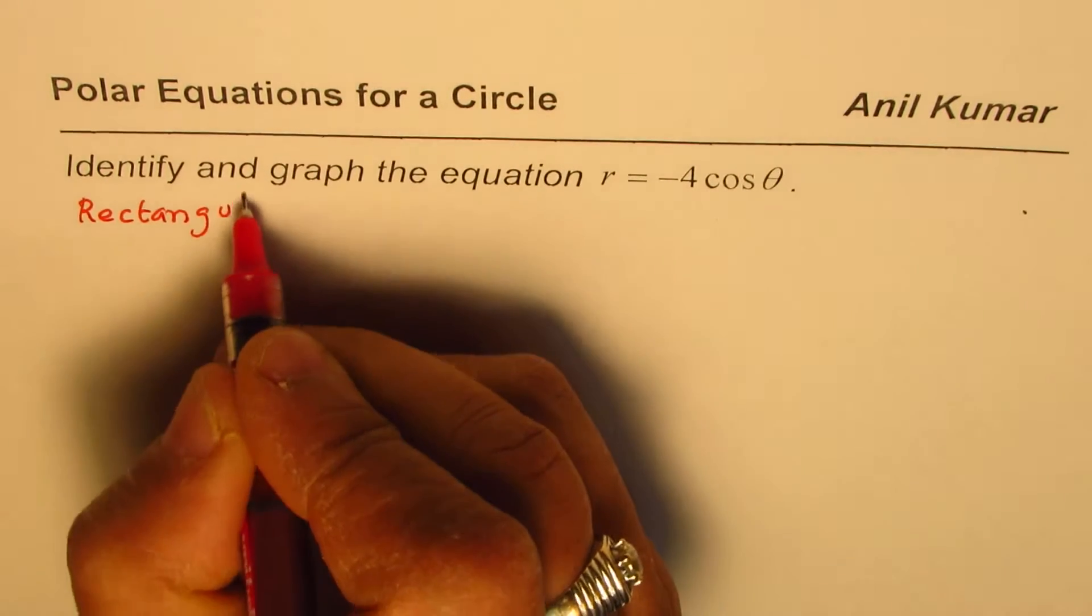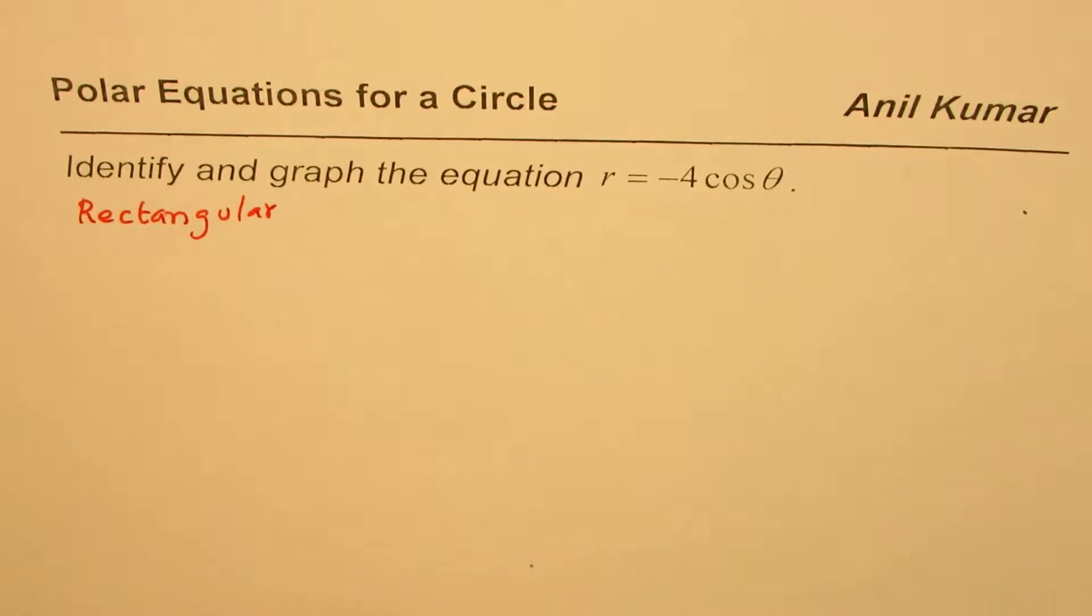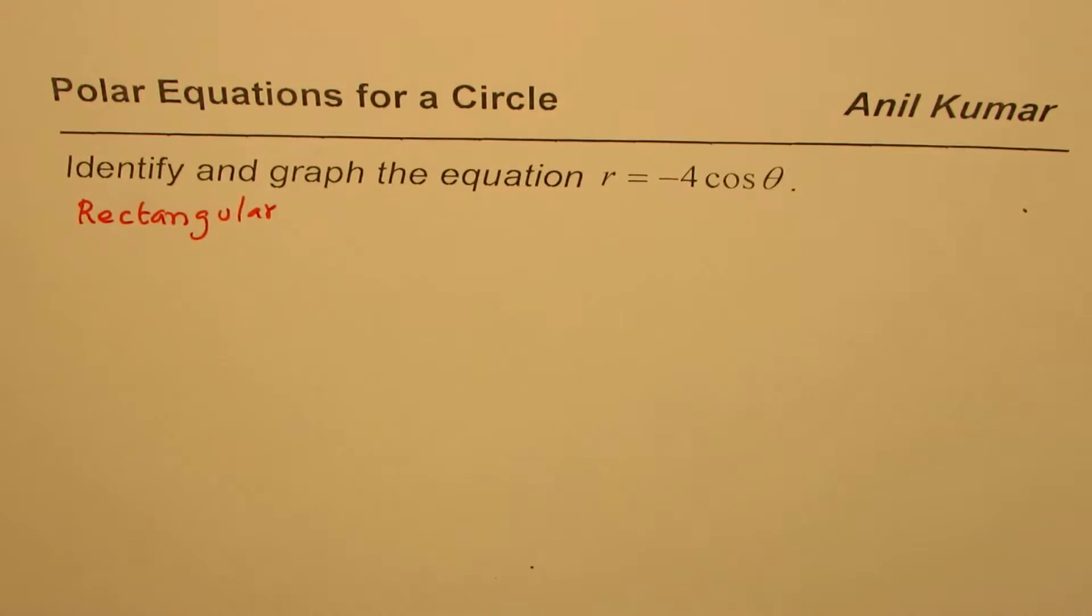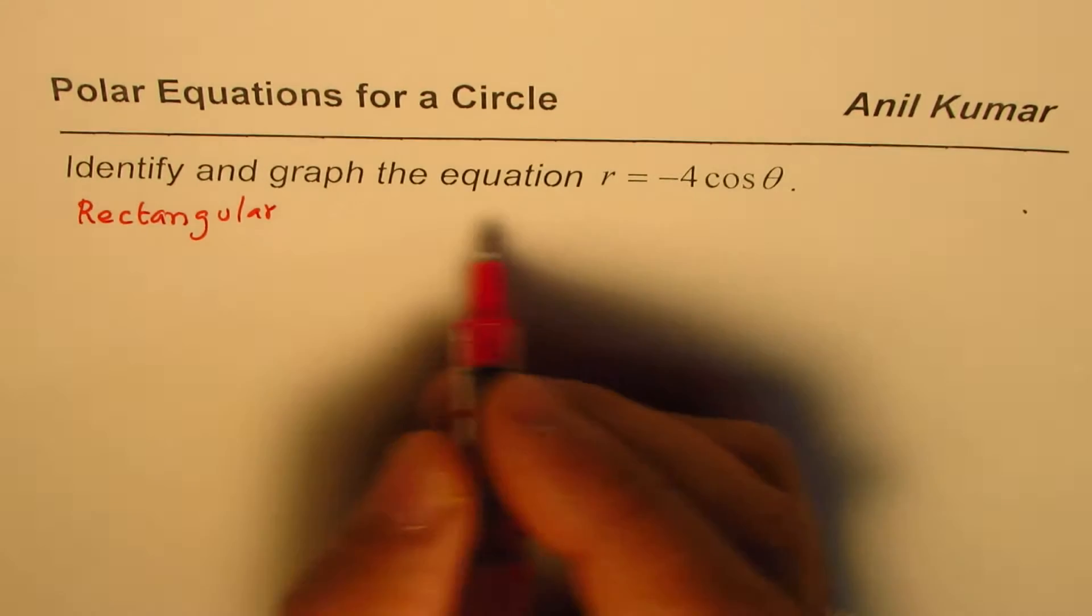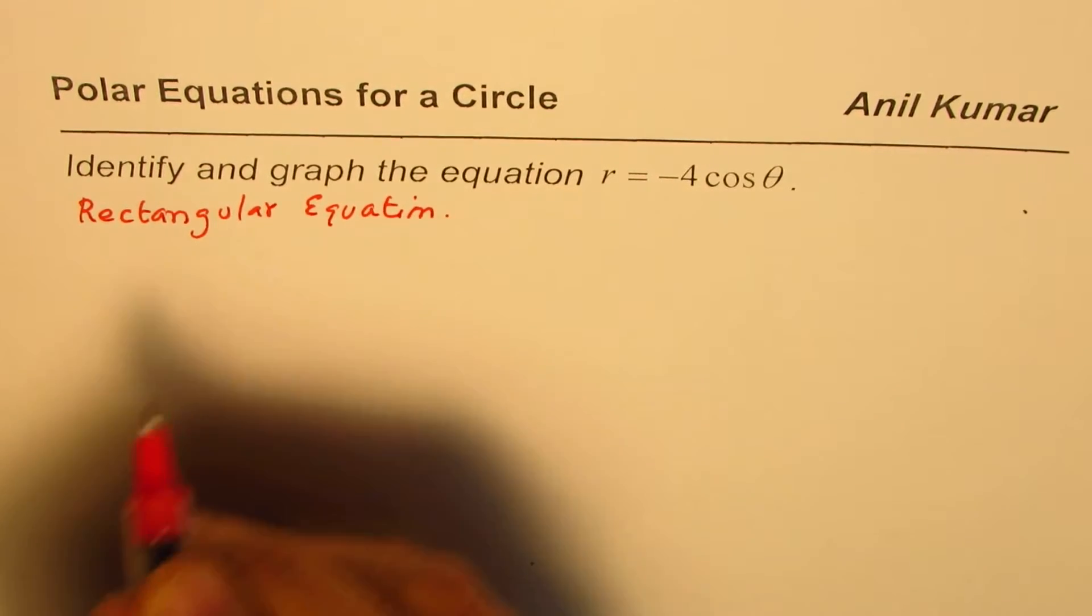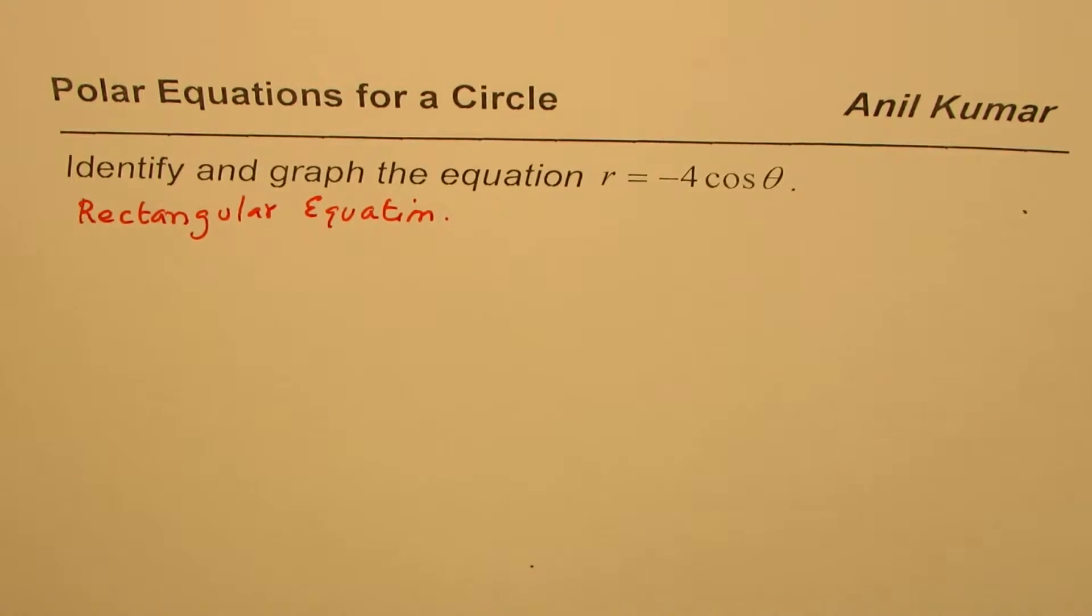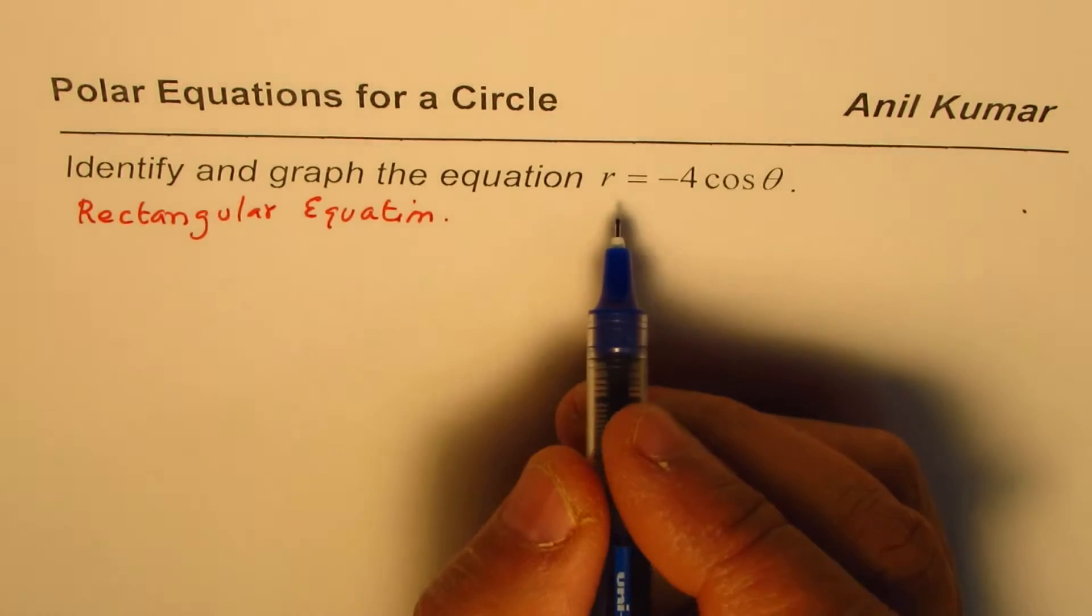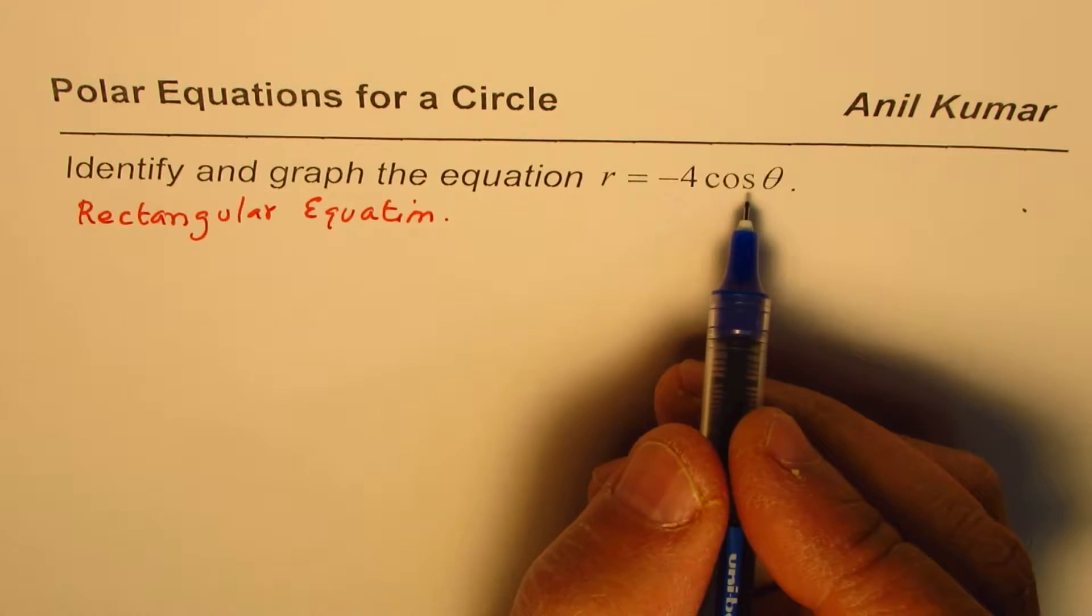And then, we can generalize how such equations are related to circle. So, we'll write rectangular equation for the given equation. Now, to convert it into rectangular form, we need to know a few things, that is, how to write r and theta in terms of x and y.